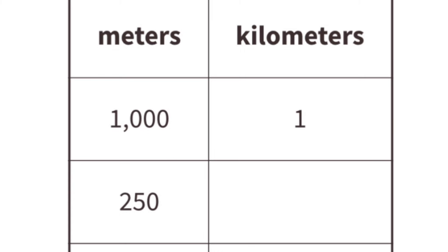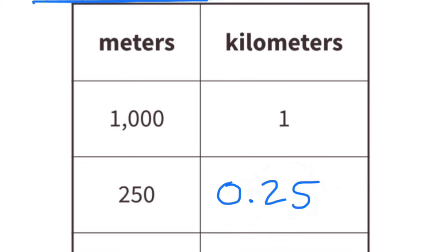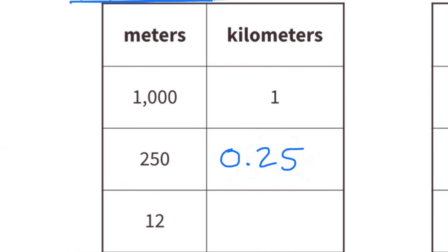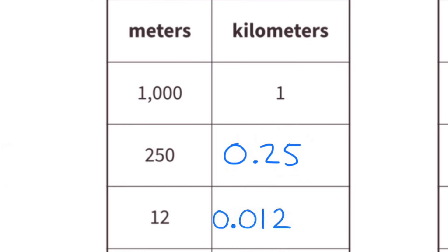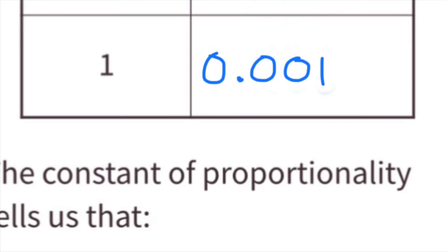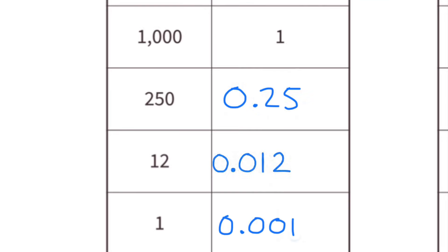So I have to ask myself, what's 1,000 times smaller than 250? 2,500 is 1,000 times smaller than 250 — for every 250 meters, you would have 2,500 of a kilometer. What's 1,000 times smaller than 12? So 12 meters is a distance of 1,000 of a kilometer. What's 1,000 times smaller than 1? So for every 1 meter, it's 1,000th of a kilometer.